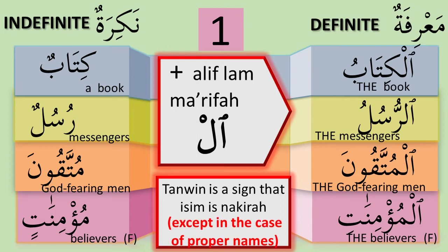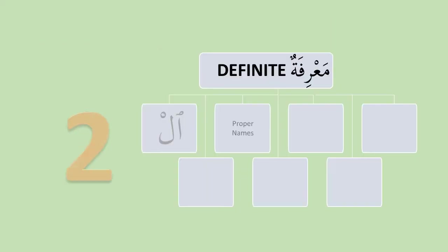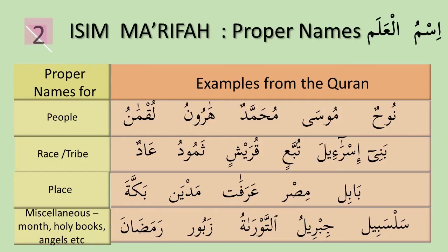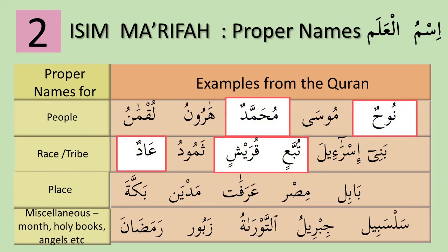But not all isim ending with tanwin are nakirah. Proper names such as Muhammadun, the name of our beloved Prophet SAW, have tanwin but are still isim ma'rifah. This brings us to the second group of isim ma'rifah: proper names. Names appearing in the Quran are clearly isim ma'rifah because we know exactly who, what, or where we're talking about. Proper names need not adhere to the tanwin rule — they can be constructed with or without tanwin.